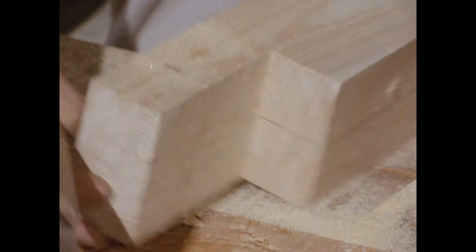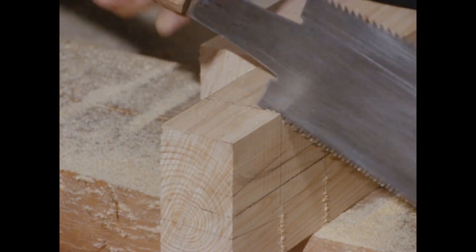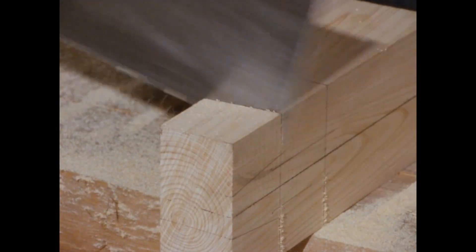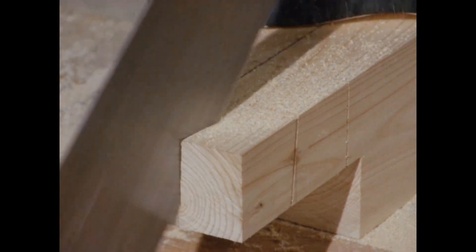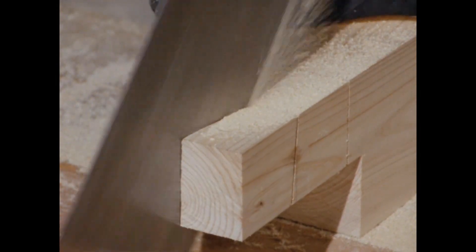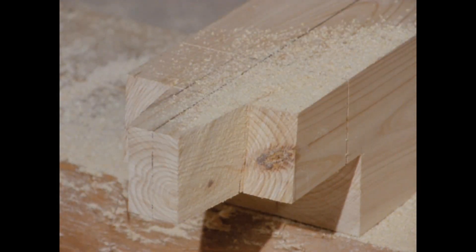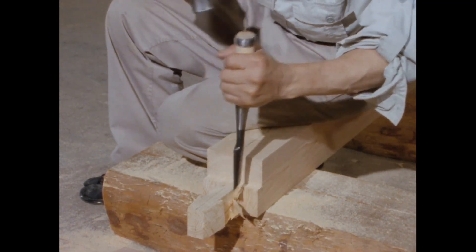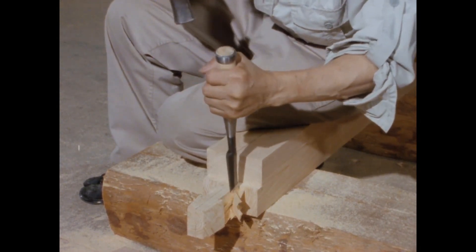First, make a lateral cut for the part that will become the neck. Then cut off the part that will become the kama. Fine-tune the neck using the tsuki nomi.